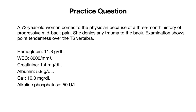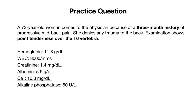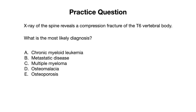Let's note the key findings. This is more of a chronic picture, occurring over three months. There is point tenderness over a specific vertebra, concerning for a possible fracture. The patient has anemia with a hemoglobin of 11.8, an elevated creatinine of 1.4, elevated albumin at 5.9, and calcium slightly elevated at 10.3. An X-ray reveals a compression fracture of the T6 vertebral body, which is where the patient is having pain.